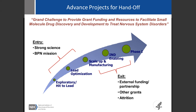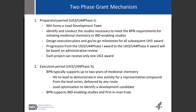You can enter anywhere along the spectrum and exit anywhere along the spectrum. Our goal for every project should outline a plan from wherever you're starting to phase one. But if you get a licensing deal and want to go off with a new partner, that's a win for us and a win for you. It is a milestone-driven program, which means some projects face attrition because they fail to meet scientific milestones — we can't justify going forward. It is a two-phase grant mechanism, meaning we award the first phase as a sort of kick-the-tires preparatory phase.